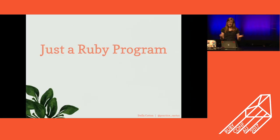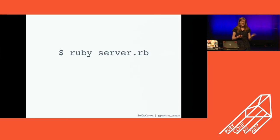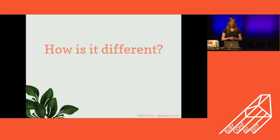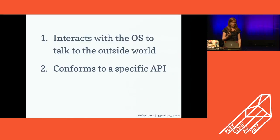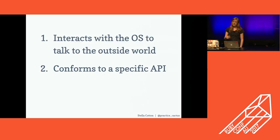In a lot of ways, a server is just like any other program on your computer. It has code, it lives in a file, you can run it. Today, our little server we're going to kick off with just Ruby server.rb. But what makes this server different from all the web development code we write inside Sinatra or Rails? One: it's going to communicate directly with the outside world by leveraging the power of the operating system itself. And two: this communication happens over a very specific API.